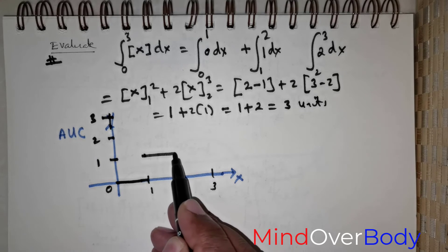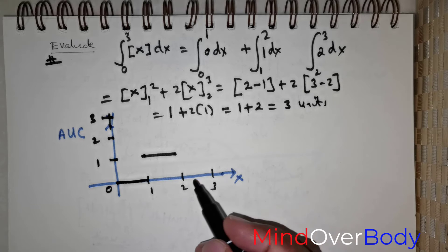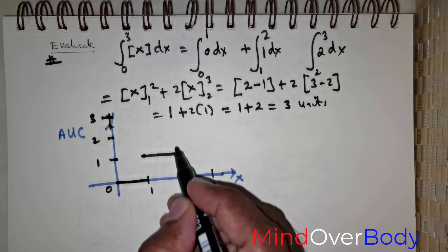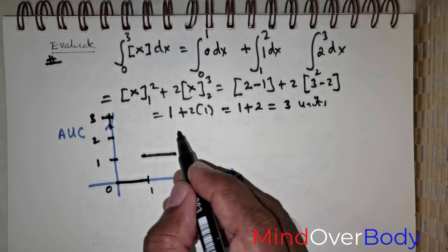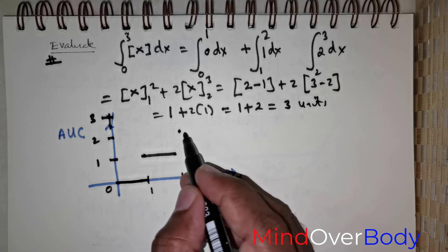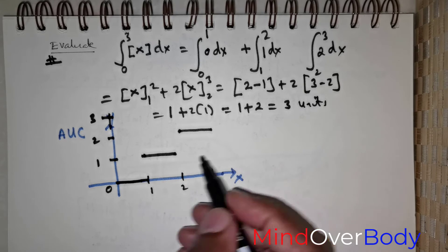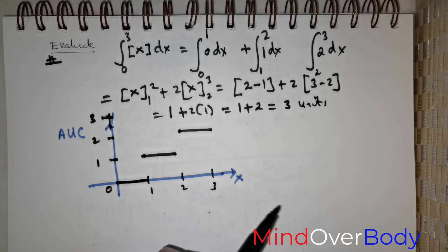So, this is going to be a straight line there. And there is going to be a discontinuity here. There is going to be a break. And it will start from 2 and it will move up to 3. So, this is how the step looks, or the graph looks for the greatest integer function.